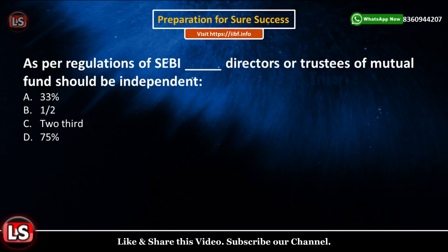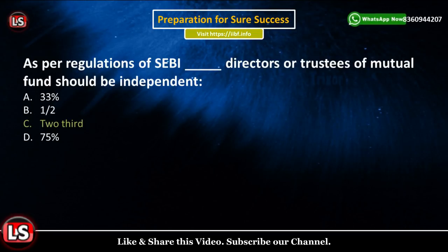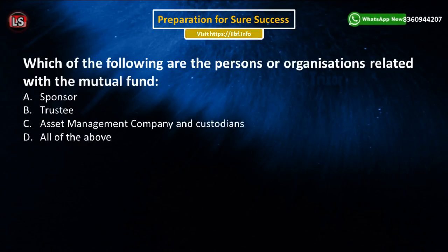The next question asks: As per SEBI regulations, how many directors or trustees of a mutual fund should be independent? The answer is two-thirds — that is Option C. So two-thirds of the directors or trustees of a mutual fund must be independent, as per regulations given by SEBI.